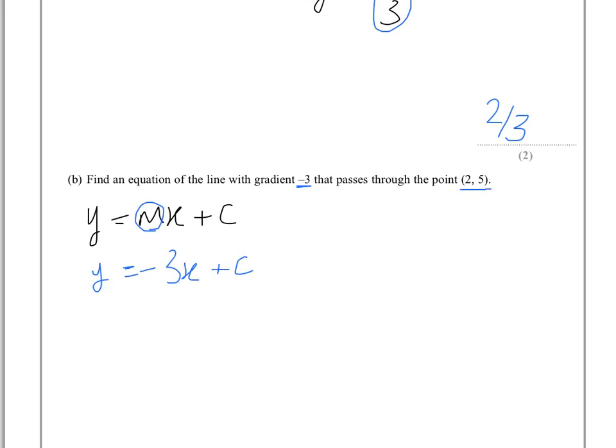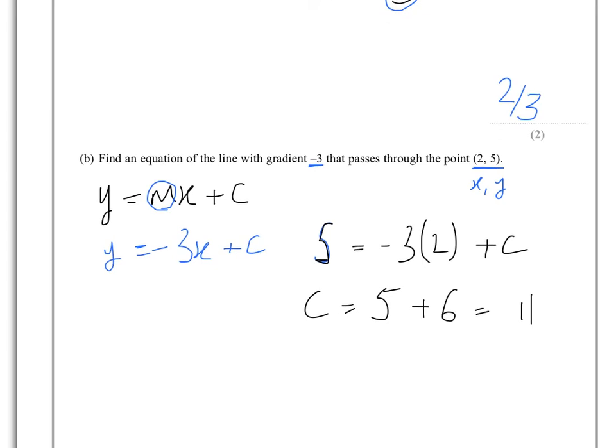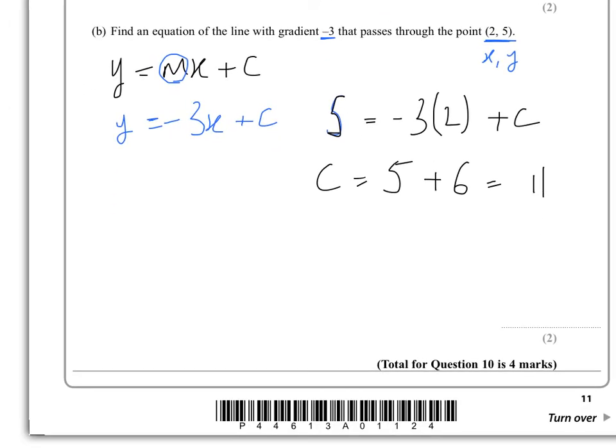We know that a point that it goes through, and keeping in mind that's in the form xy, so what that means is we can substitute that into this equation. So y is 5, that equals minus 3 times x is 2 plus c. That means that c will be equal to 5 plus, because there's a minus it goes over to the other side, plus 3 times 2 which is 6. So that means that c equals 11. So that means that the equation of the line becomes y equals minus 3x plus 11.